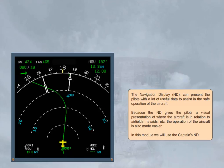The Navigation Display, ND, can present the pilots with a lot of useful data to assist in the safe operation of the aircraft. Because the ND gives the pilots a visual presentation of where the aircraft is in relation to airfields, nav aids, etc., the operation of the aircraft is also made easier. In this module, we will use the captain's ND.